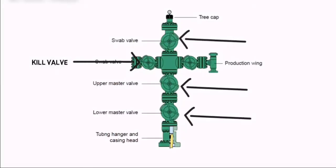The wing valves are used to connect the Christmas tree with the production line, which transfers the oil to the manifold. The swab valve is normally used to monitor the wellhead pressure with a pressure gauge.